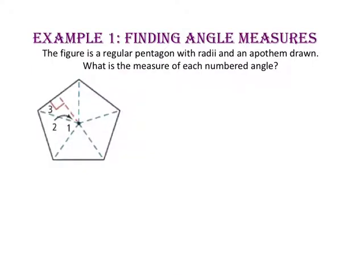In example 1, we will find angle measures. The figure is a regular pentagon with radii and an apothem drawn. What is the measure of each numbered angle? Let's start by finding the measure of angle 1. Since we can circumscribe a circle about this regular pentagon, the sum of the vertex angles will be 360 degrees.